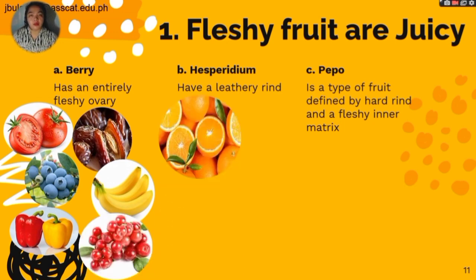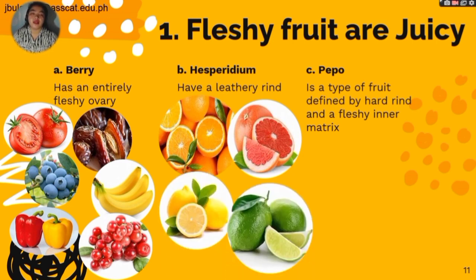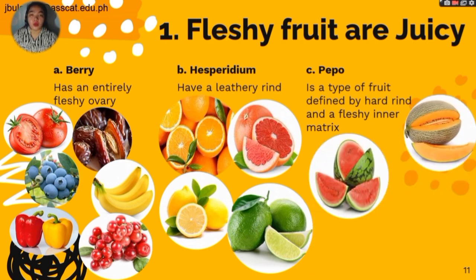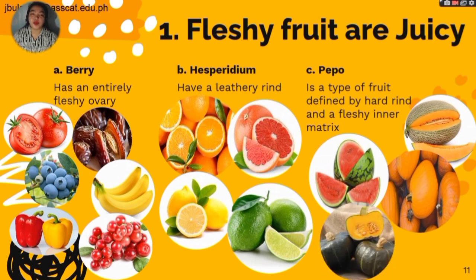The second fleshy fruit is the hesperidium, which has a leathery rind. Examples are oranges, grapefruit, lemons, and lime. The third fleshy fruit is the pepo, which is a type of fruit defined by a hard rind and a fleshy inner matrix. Examples are melon, watermelon, pumpkin, and squash.